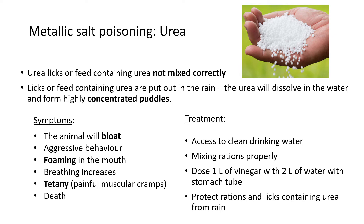Main symptoms of urea poisoning: animals will become bloated with an enlarged stomach, they become aggressive with behavioral changes, they will foam at the mouth, breathing will increase, and they will have tetany — painful muscle cramps. In severe cases, the animal could die. Normal salt poisoning is not as severe and can often be treated with enough water in time, but urea poisoning can very quickly become very dangerous and the animal will die.